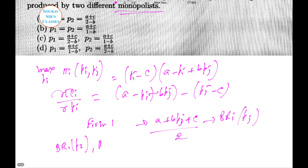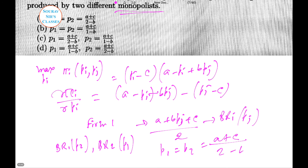Solving the two best response functions BR1(P₂) and BR2(P₁) simultaneously, we get P₁ and P₂ separately. It turns out P₁ = P₂ and the equilibrium price is (A + C) / (2 − B). So both monopolists charge equal prices, and the correct option is A.